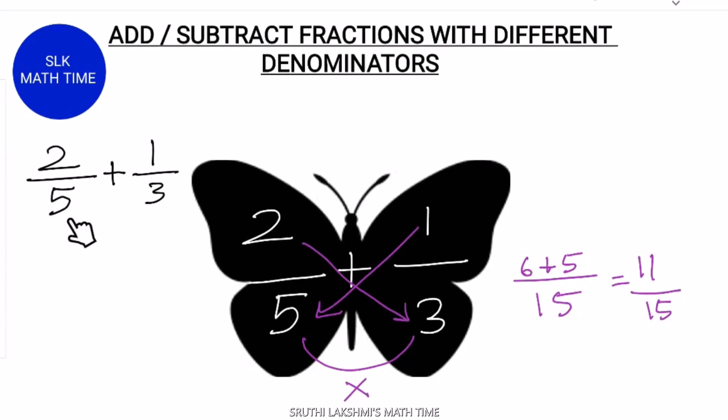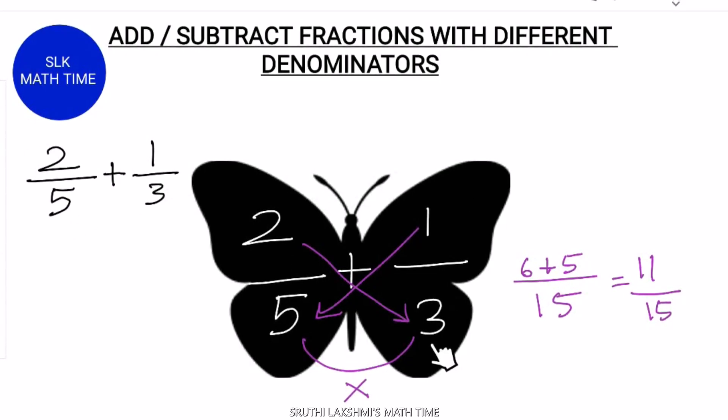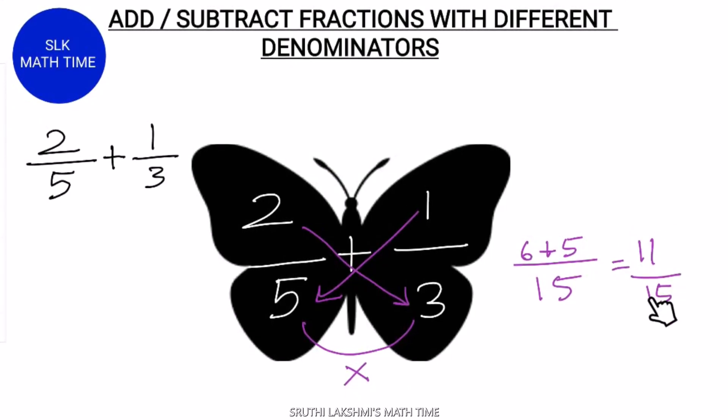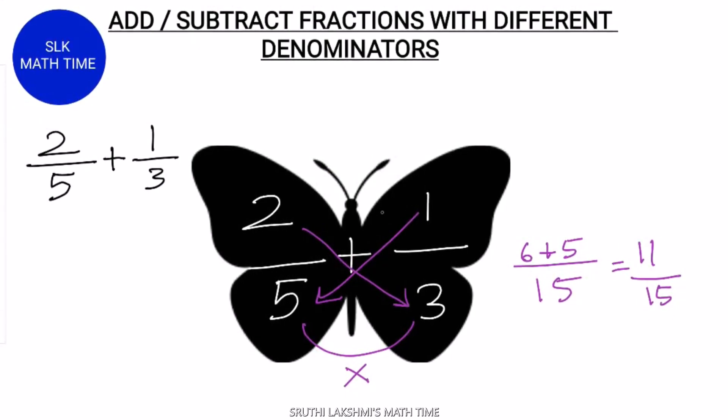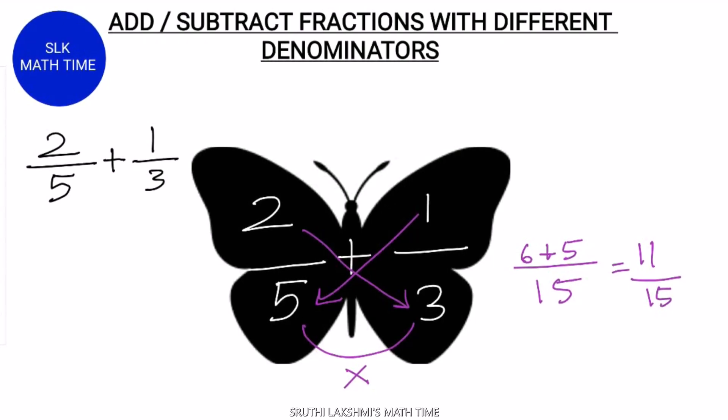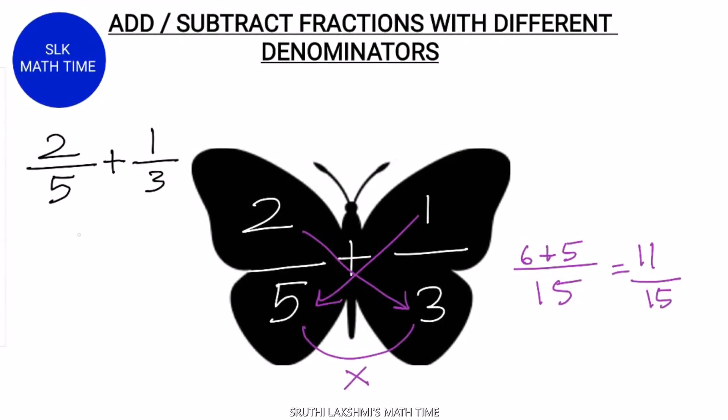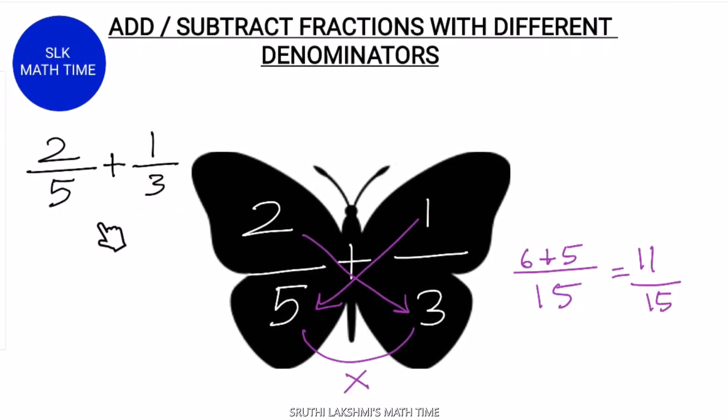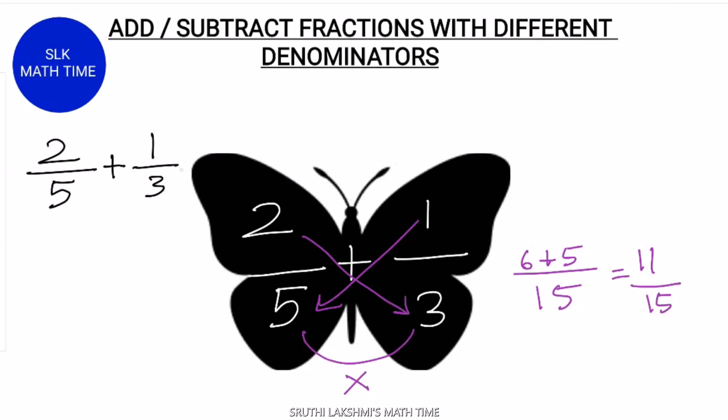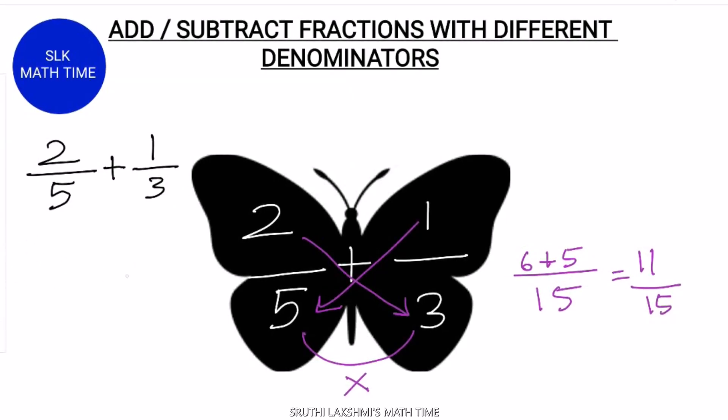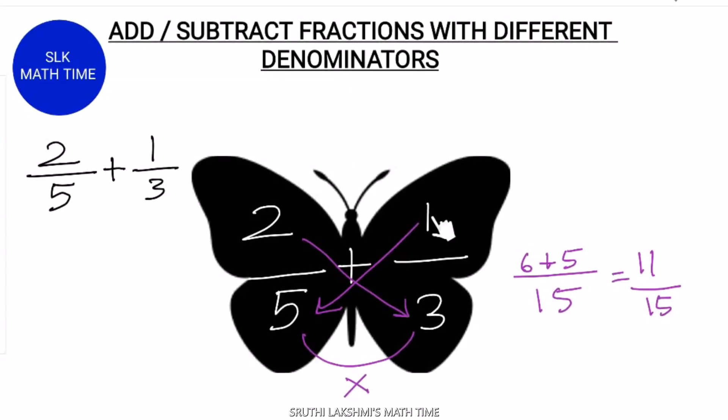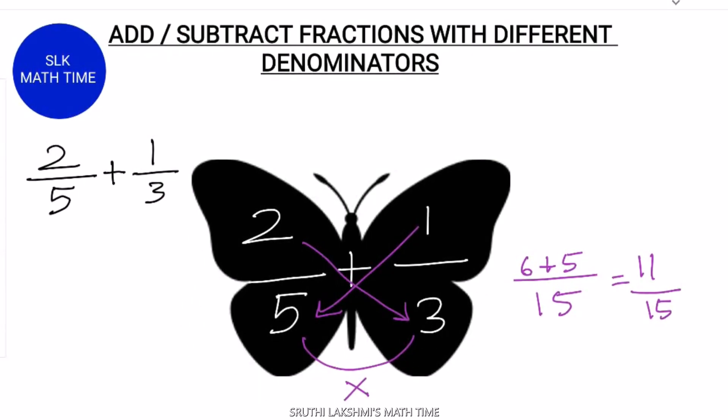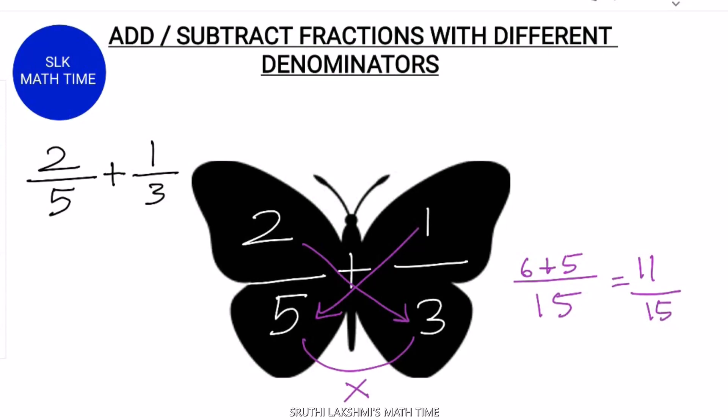So 2 by 5 plus 1 by 3 is 11 by 15. If you can simplify your answer, if possible, simplify it. Isn't this much more easier than when we change the denominators to a common number and multiply them and do all those stuff? Instead, we can use this butterfly method to have an answer that is quicker.